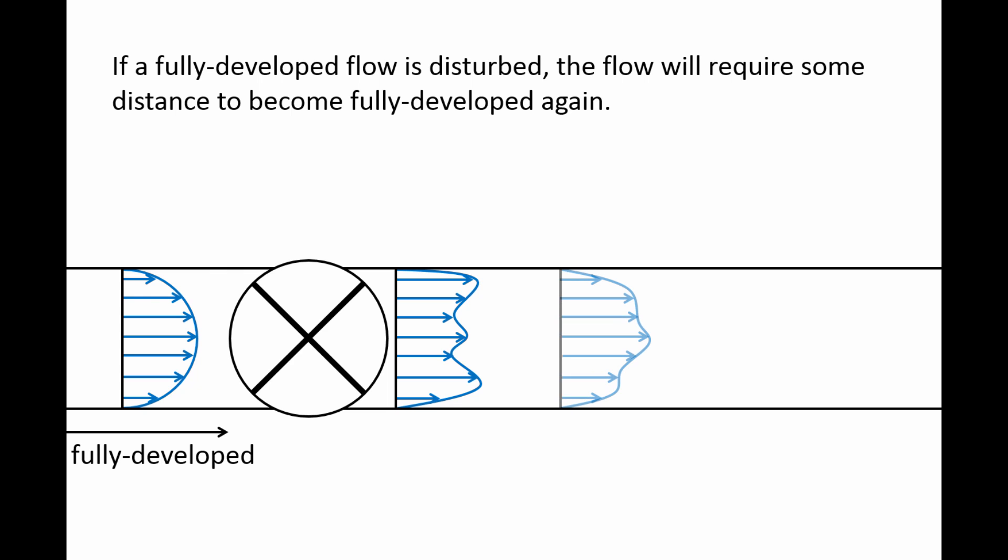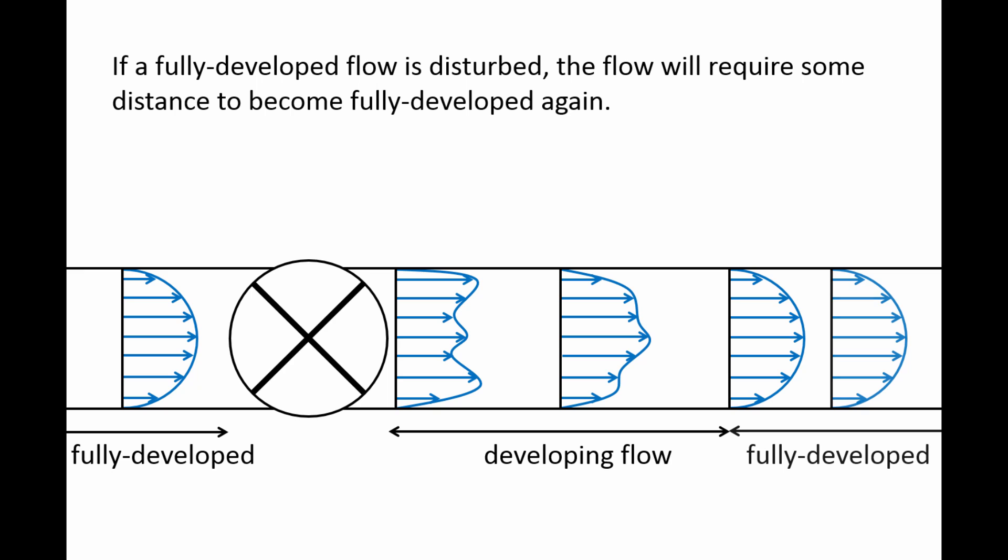However, as the flow progresses down the pipe, it will begin to regain its characteristic parabolic shape. Notice that while the flow is developing, the velocity profile changes in the axial direction. Once the parabolic shape is restored, the flow is once again fully developed and does not vary in the axial direction.